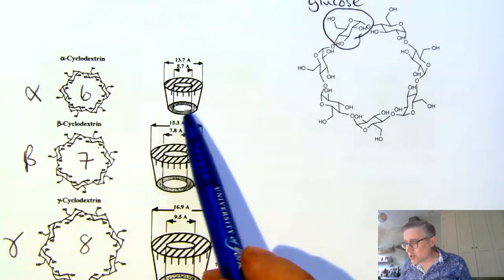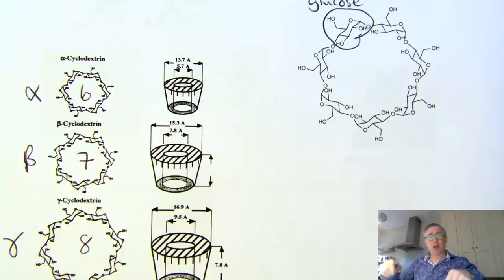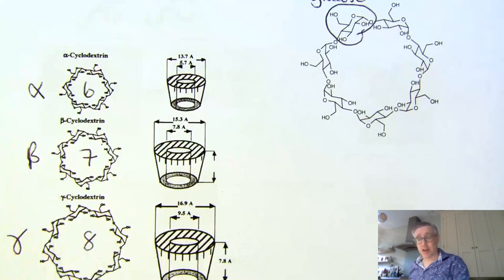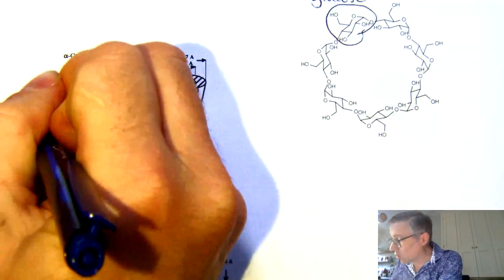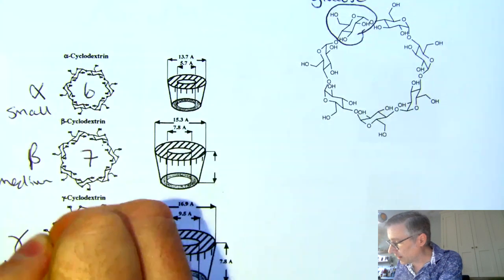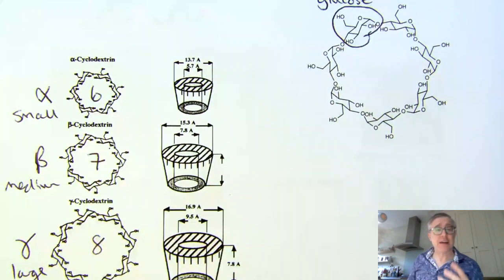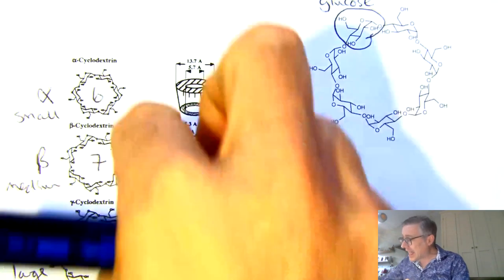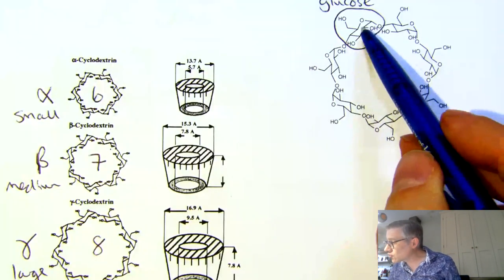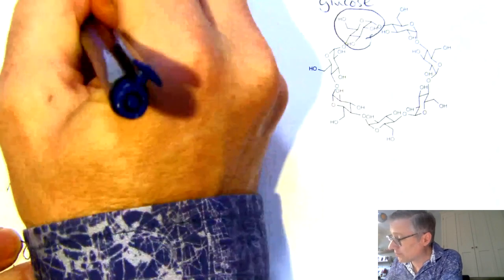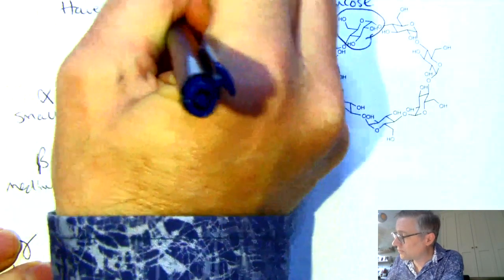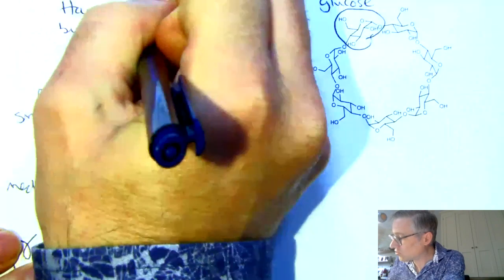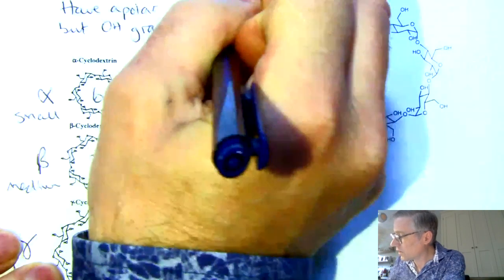The way these molecules look is rather like a bucket shape — a ring of sugars. They have different dimensions depending on whether they're alpha, beta, or gamma. We can think of them as the small one, the medium one, or the large one, rather like the three bears. The bucket-shaped structure has an apolar interior; all the CH groups on the sugar are quite apolar.